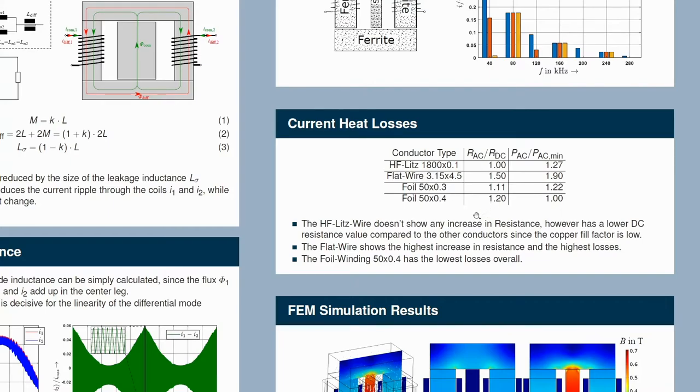So what can we see? The high frequency Litz wire has the lowest skin and proximity losses, since the factor is one. The flat wire has the highest skin proximity losses and the highest losses overall.